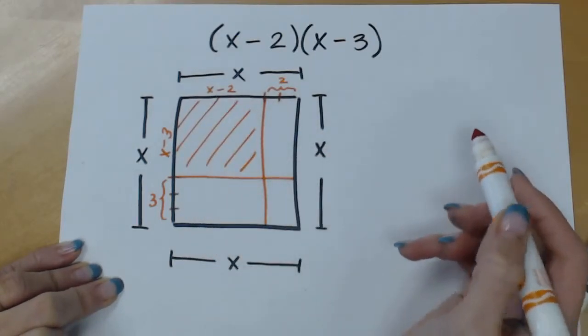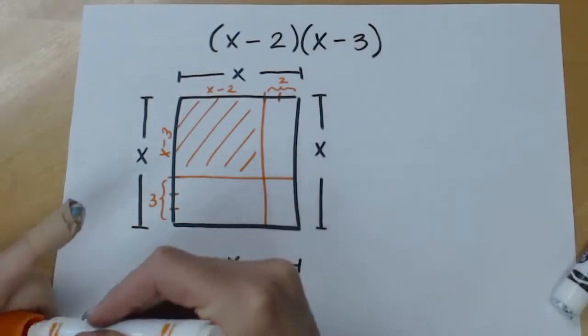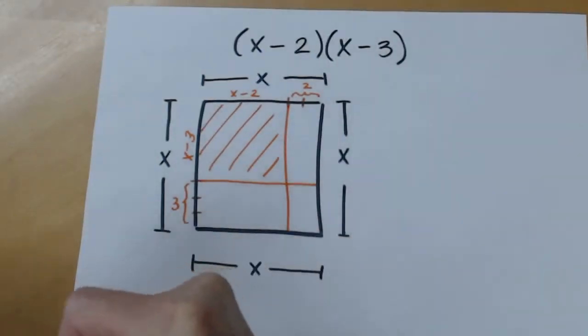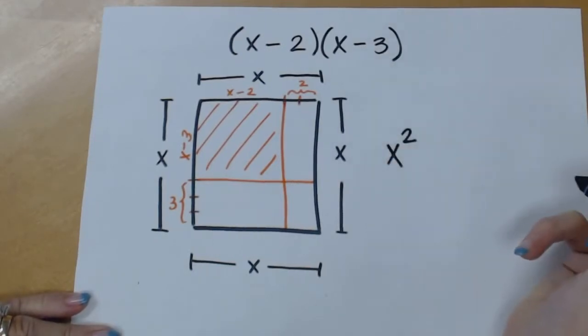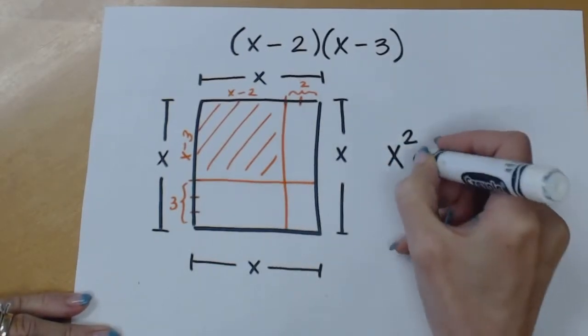So the orange area which is what we want can be found by taking the entire black area which is x squared and then we are going to subtract off the pieces.